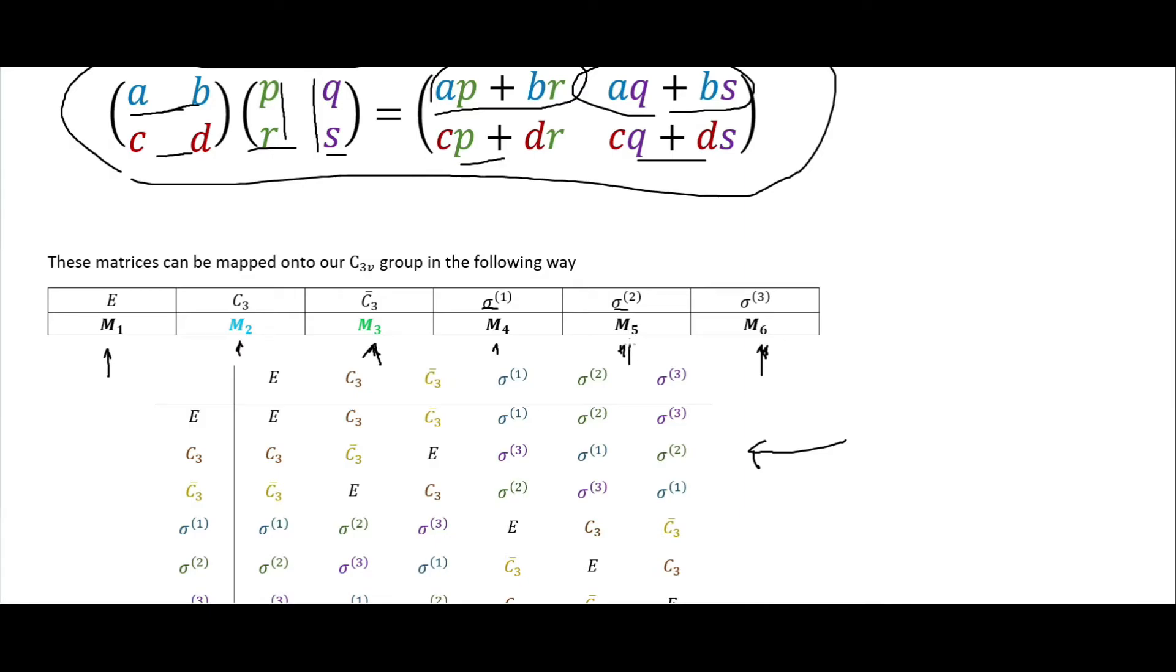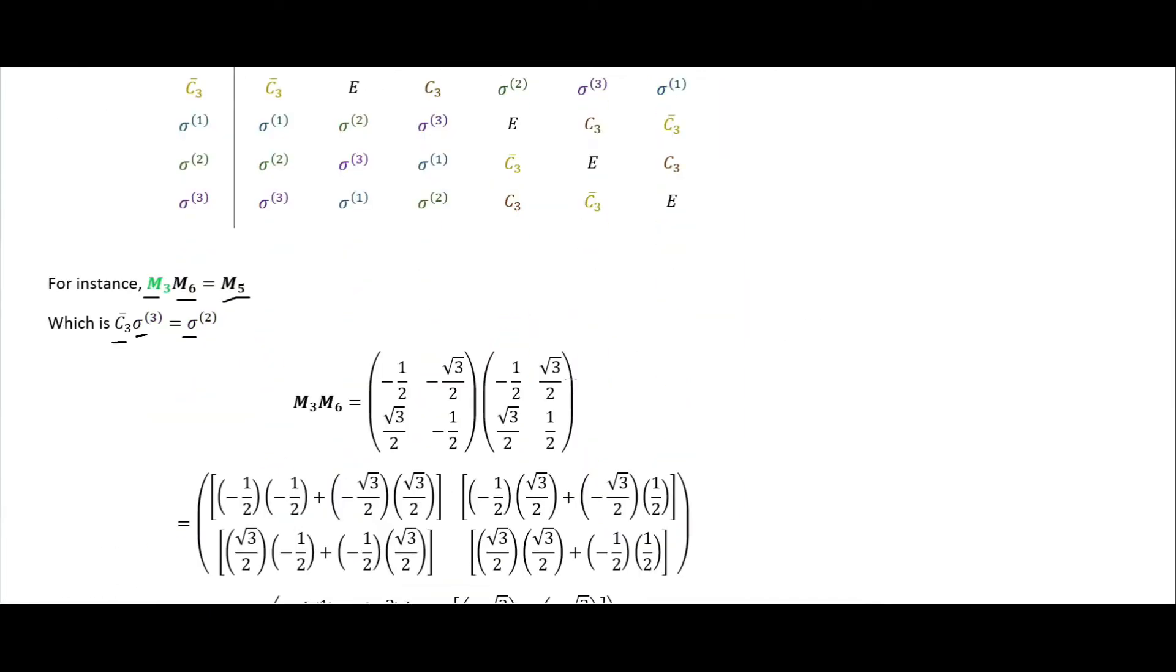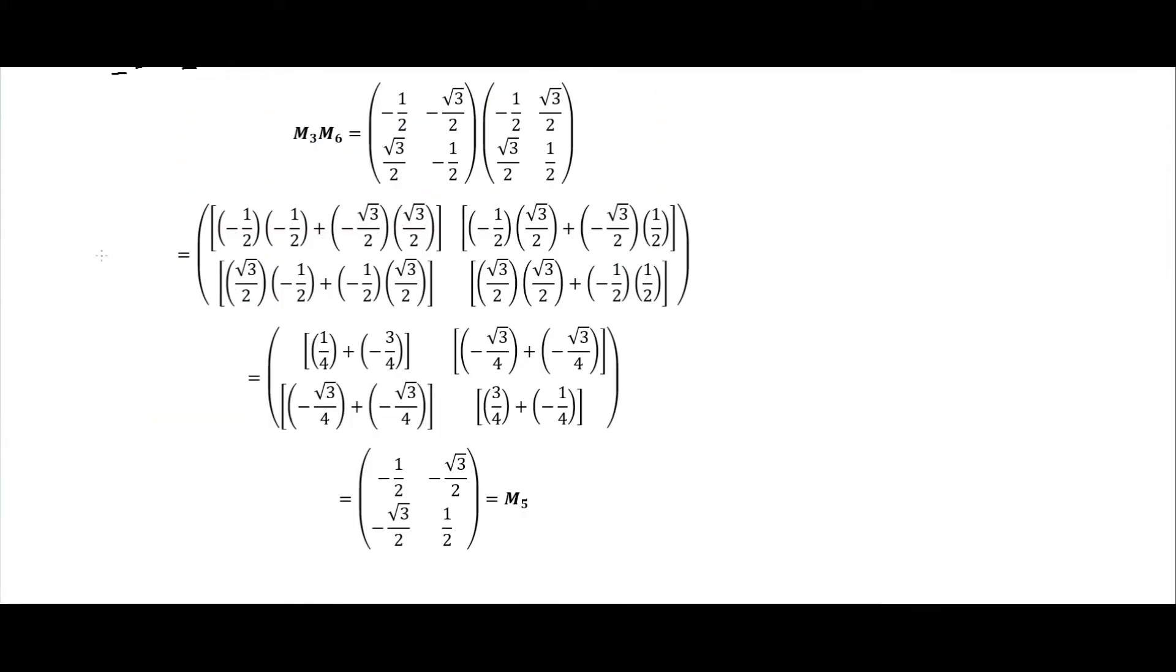Sigma2 is mapped onto M5, and that is right there. So we can see how doing the binary operation of matrix multiplication with this group of matrices is isomorphic to doing the symmetry operations with our C3V symmetry group.